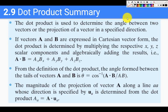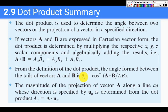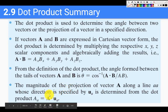To summarize the dot product: it is used to determine the angle between two vectors or the projection of a vector in a specified direction. If vectors A and B are in Cartesian form, A · B = A_x B_x + A_y B_y + A_z B_z. The angle θ = cos⁻¹(A · B / |A||B|), and the magnitude of the projection vector is A · B / |B|.